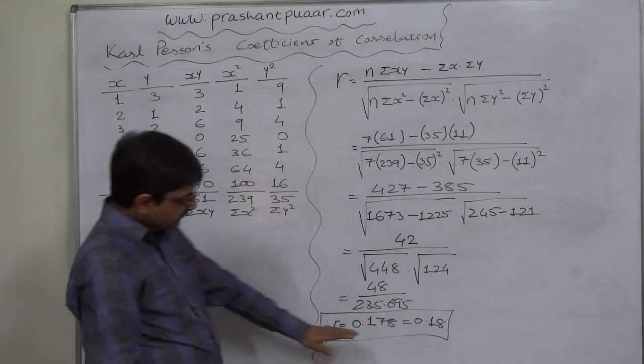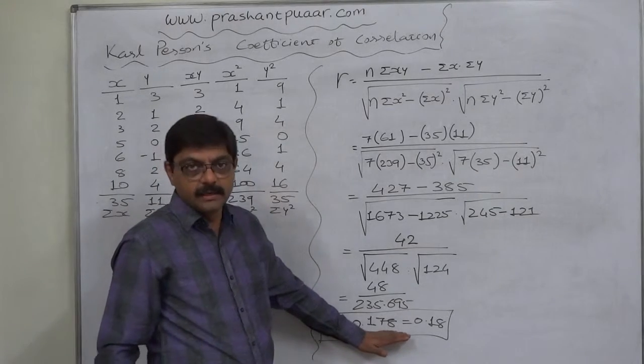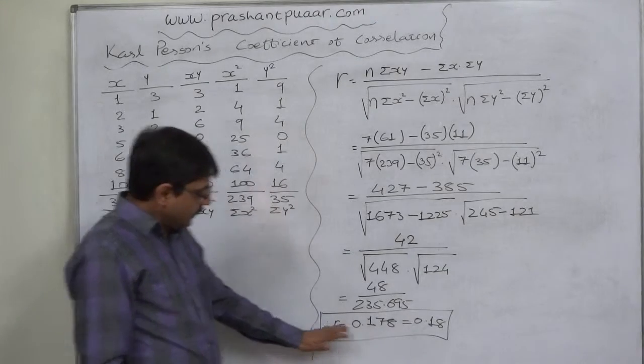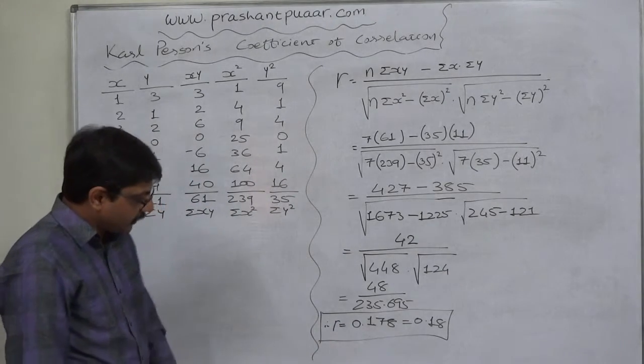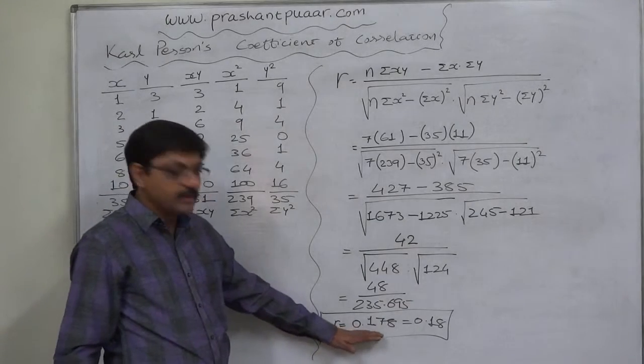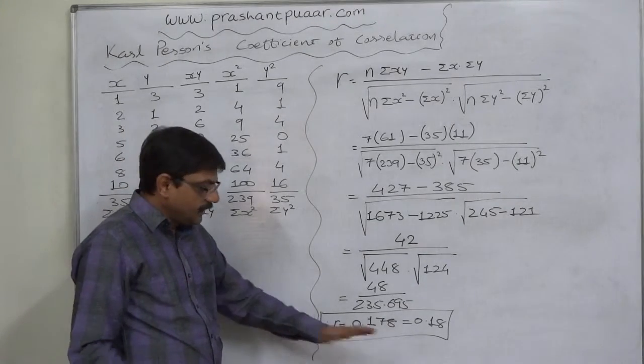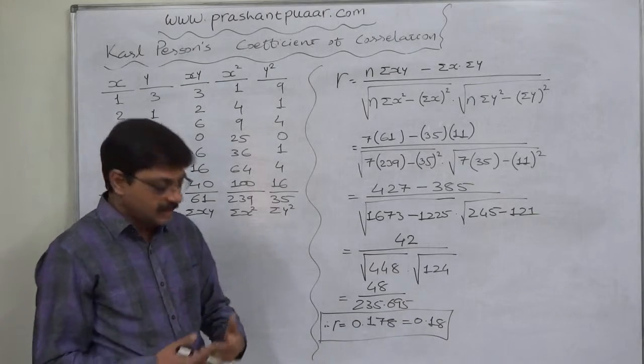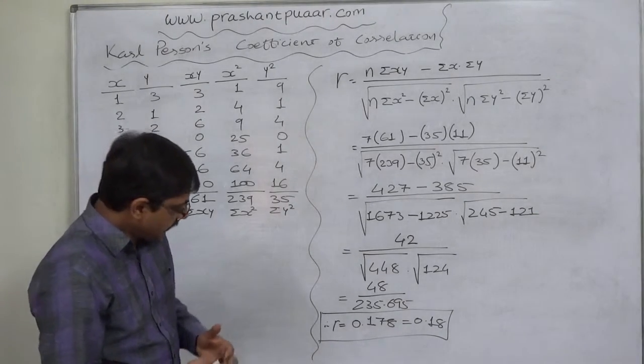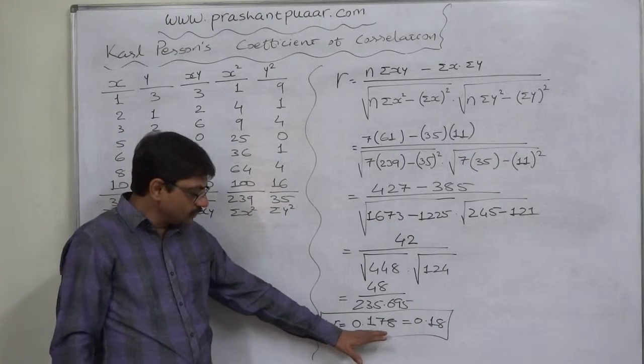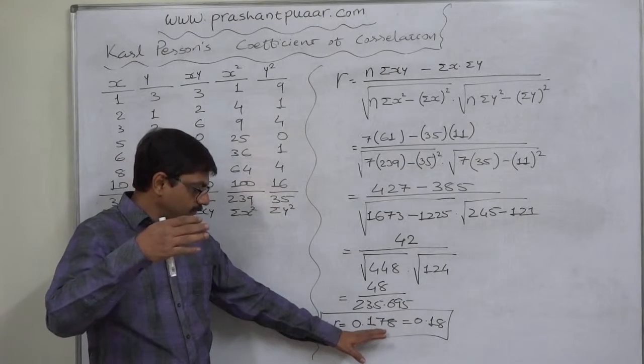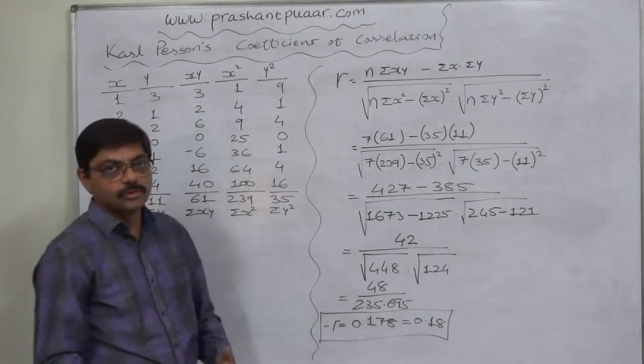The answer is very far from 1, very near to 0, but it is positive. We can conclude that broadly there is partially positive correlation between the two variables X and Y. If we go for further classification of type of correlation, it is moderately positively correlated, because the coefficient of correlation is very low, say against 0.5 also. There is not much correlation between the two variables.